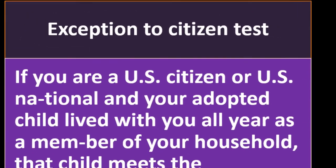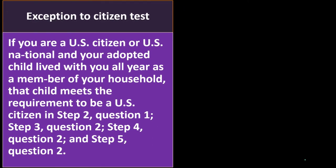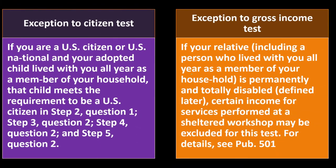Exception to the citizen test: if you are a U.S. citizen or U.S. national and your adopted child lived with you all year as a member of your household, that child meets the requirement to be a U.S. citizen in step two question one, step three question two, and step four question two. So we'll get into the questionnaire, but this is your exception to the general rule.